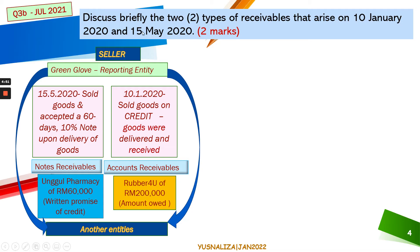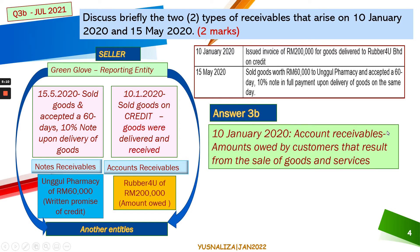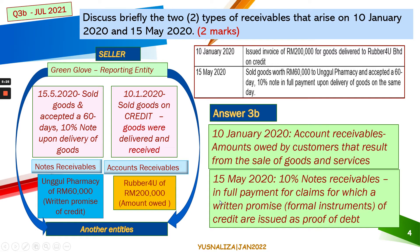For question 3b, you are asked to discuss the two types of receivable — already identified from the 10th of January and 15th of May transactions. On 10th of January, accounts receivable arose — a financial asset representing the amount owed by the customer resulting from the sale of goods and services where goods were delivered and received. On 15th of May, a 10% notes receivable was received by the company — a written promise and formal instrument of credit issued as proof of taking goods on credit.